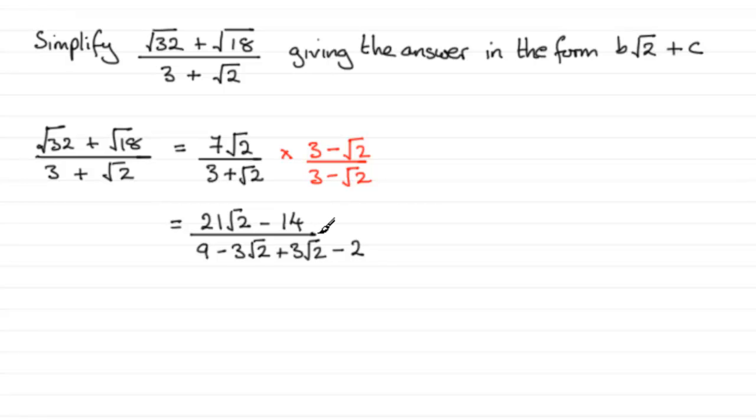We'll extend that line there. So cleaning this up, what have we got? Well, we'll keep the 21 root 2 minus 14 on top. And on the bottom, you can see we've just got 9 take away 2, 7, because minus 3 root 2 and plus 3 root 2 gives us 0 there.